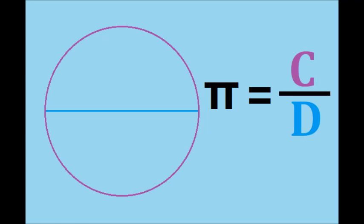From geometry, pi is defined as the ratio of a circle's circumference to its diameter. This can be seen in the picture on the screen.